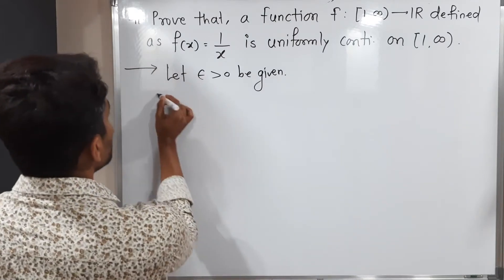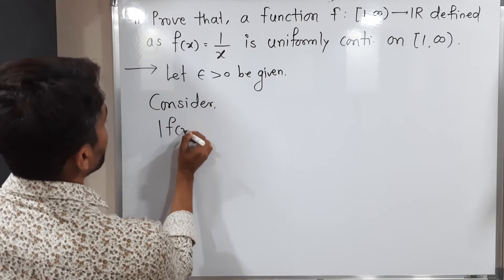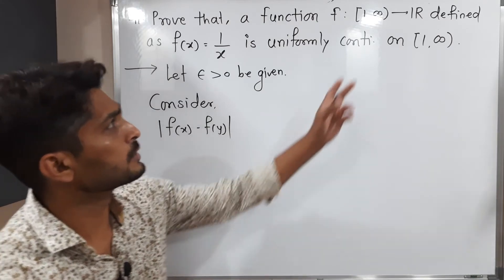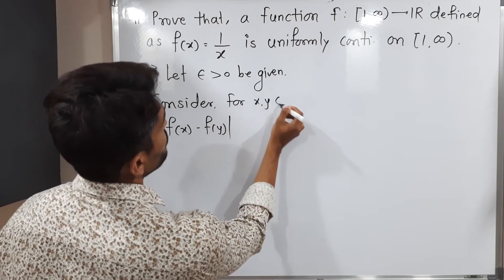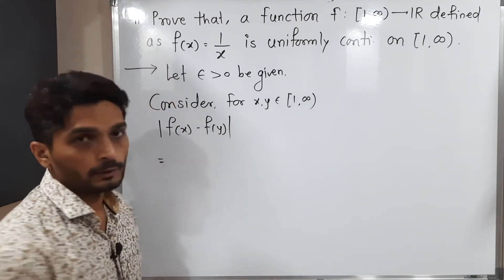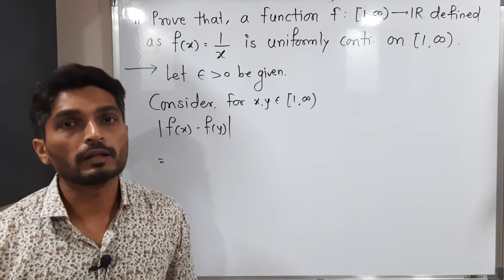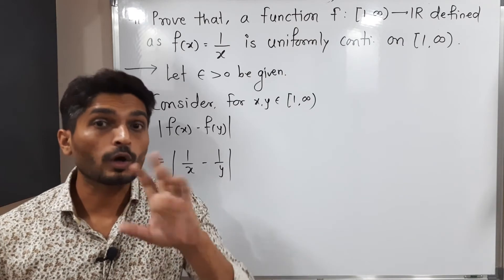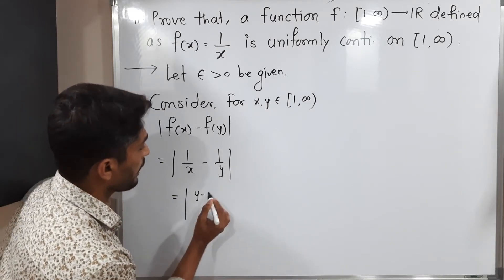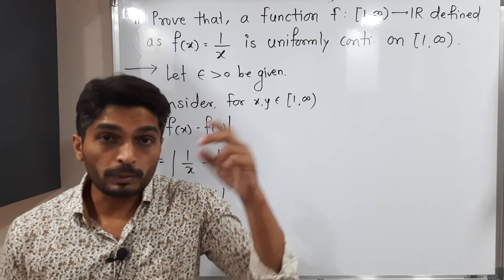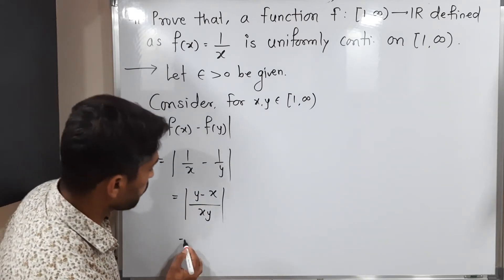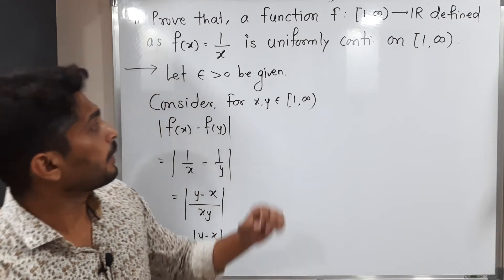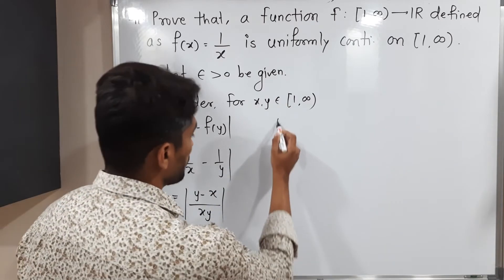Before selecting delta, I will do some basic calculation. Consider |f(x) − f(y)| for x and y belonging to [1, ∞). The value of f(x) is 1/x and f(y) is 1/y. So we write |1/x − 1/y|. We can cross-multiply to get |y − x| / (x·y). Since we have a product in the denominator, we can take separate modulus: |y − x| / (|x|·|y|).